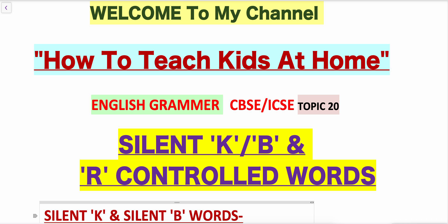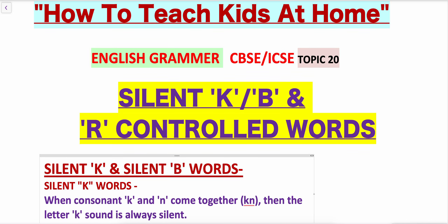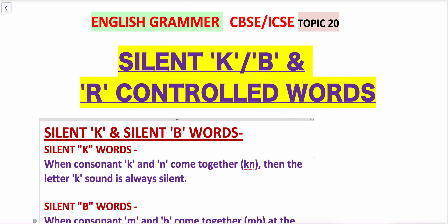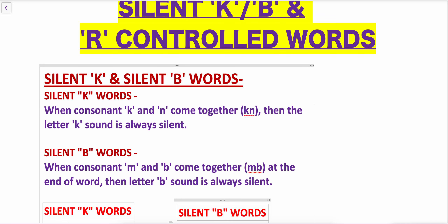Hi friends, welcome to my channel 'How to Teach Kids at Home.' This is the English grammar series for primary grades CBSE and ICSE board, and my today's topic is silent K, silent B, and R-controlled words. So what are silent K, silent B, and R-controlled words?